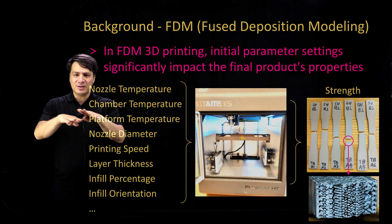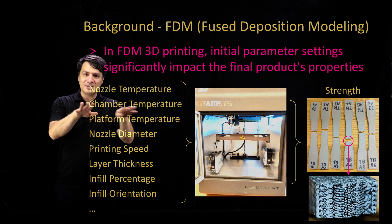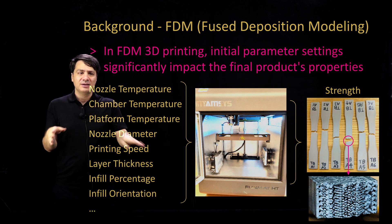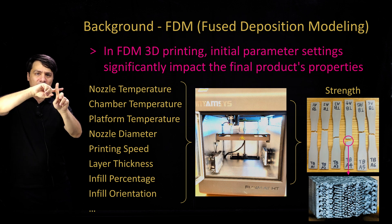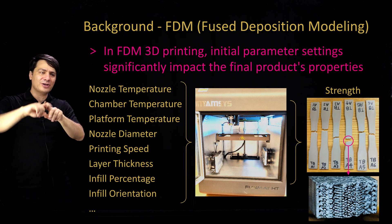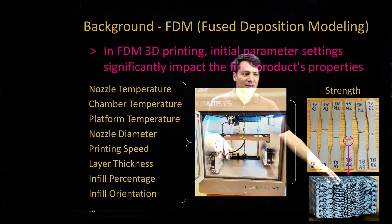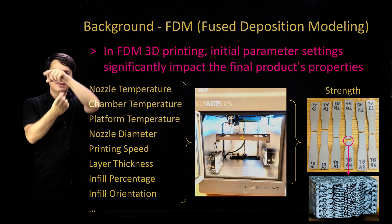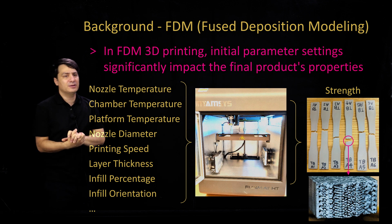The infill percentage is another parameter — sometimes when you print you put a gap between filaments, or sometimes you do 100% fill. Infill orientation is also adjustable; you can print at ±45 degrees or 0/90 degrees with respect to the loading direction. Here you can see a specimen printed in the ±45 degree direction, loaded in tension perpendicular to that.